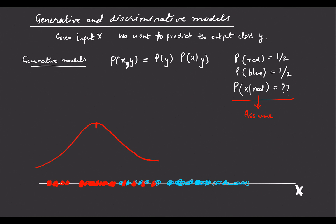So this is the mean. Using all the x values of the red data points, we find the mean mu_red and sigma_squared_red, and then plot this normal distribution in red. Similarly, we find the probability of x given blue, with mean mu_blue and sigma_blue as standard deviation.